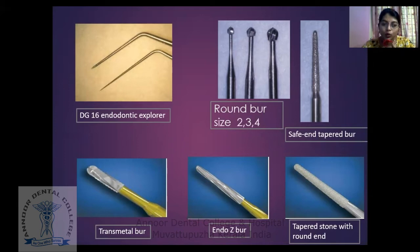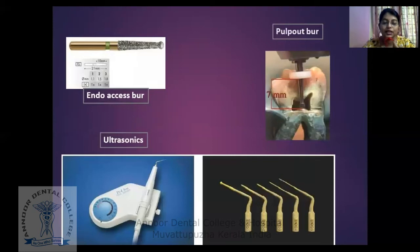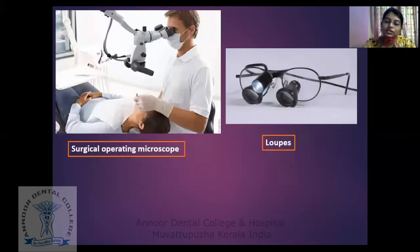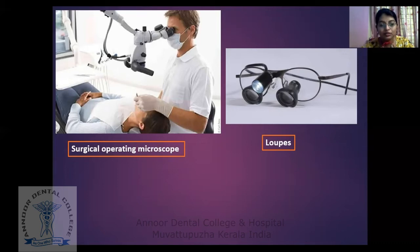Then there is the safe-end tapered bur, which has a rounded tip that helps in preventing perforation. Then the trans-metal bur, Endo-Z bur, and tapered stone with round end. There are also endo-access burrs, which have a round tip at the end to help in a good access opening and reduce errors. Then pulp-out burrs. Ultrasonics help in a good access opening and to remove obstructions. The surgical operating microscope gives very good visibility — it is always said that you should visualize in order to have better treatment. Loops can also help.